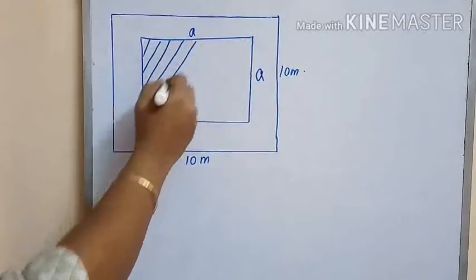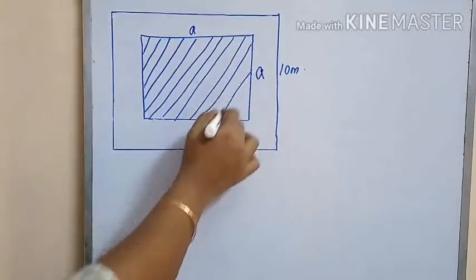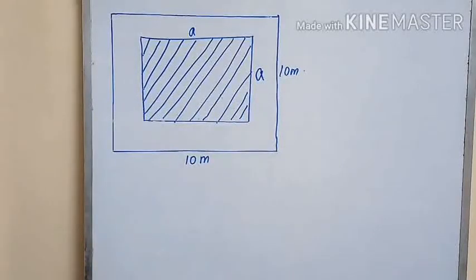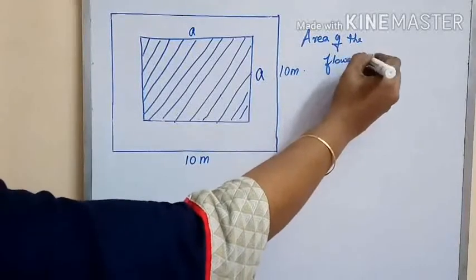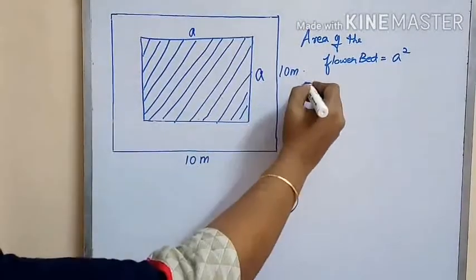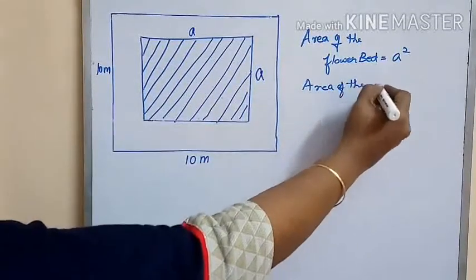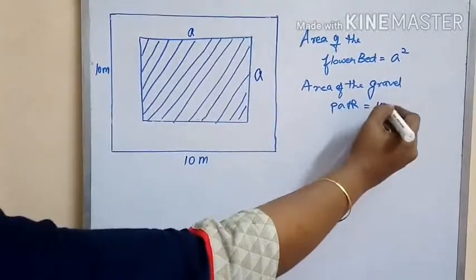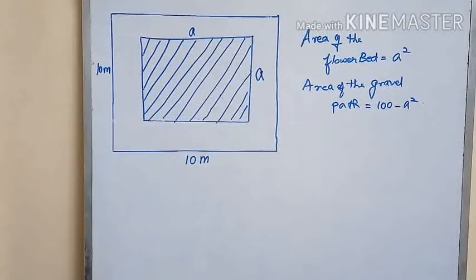Let us assume the side of the flower bed as 'a'. So the area of the flower bed is equal to a squared. The area of the gravel path is equal to 100 minus a squared. The area of the total garden is 10 squared, which is 100 square meters.